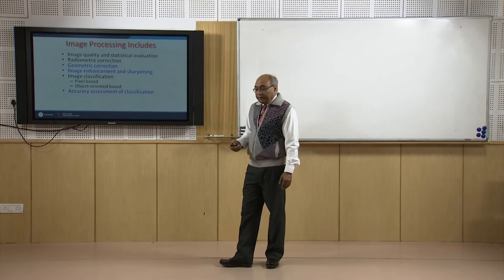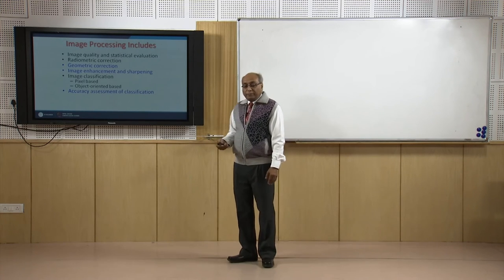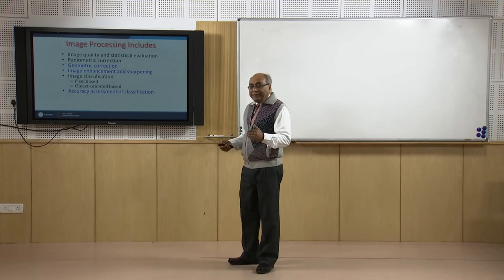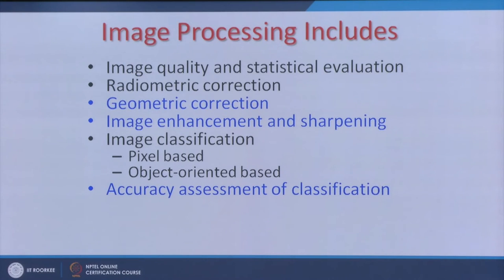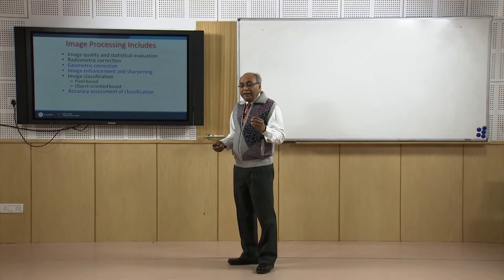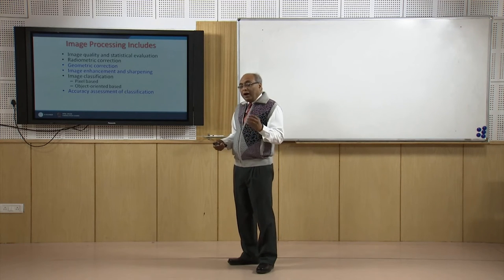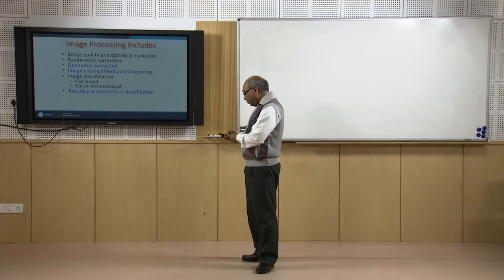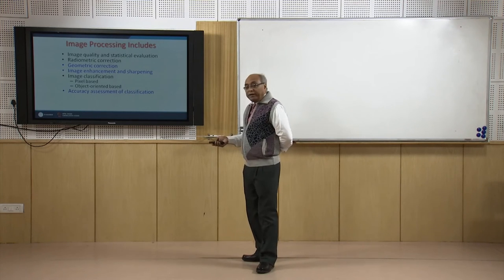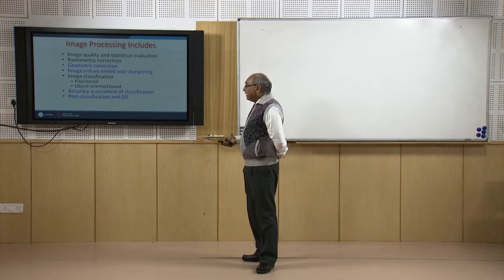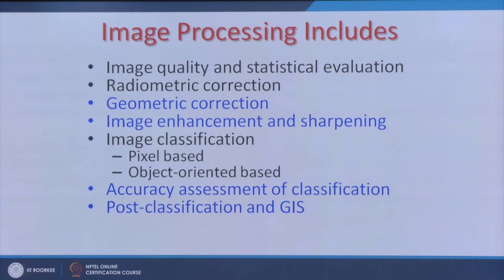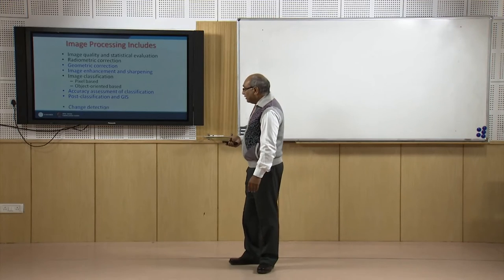After image classification, accuracy assessment is performed — for example, if an area has been classified as bare rocks or bare soil, we verify how accurately that corresponds to ground truth. The classified output image can then be used in a GIS platform or used to create further products.